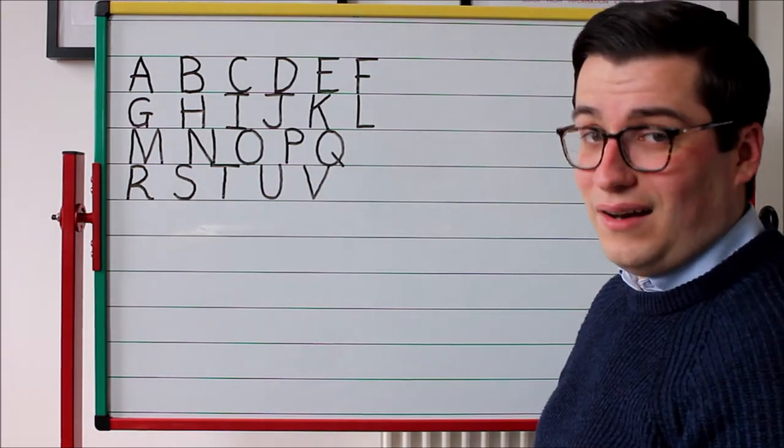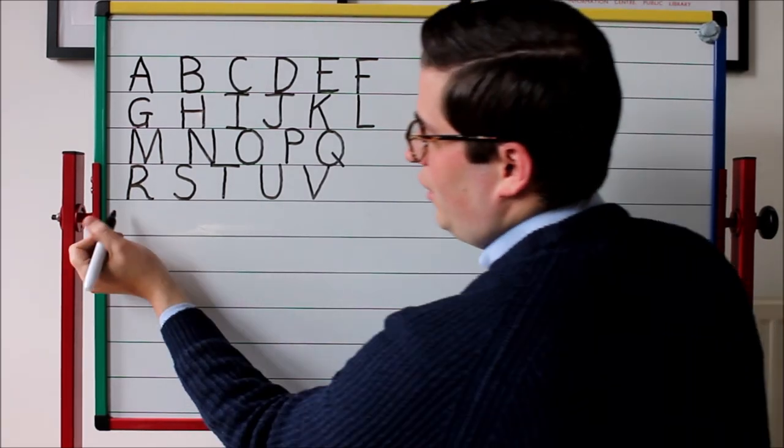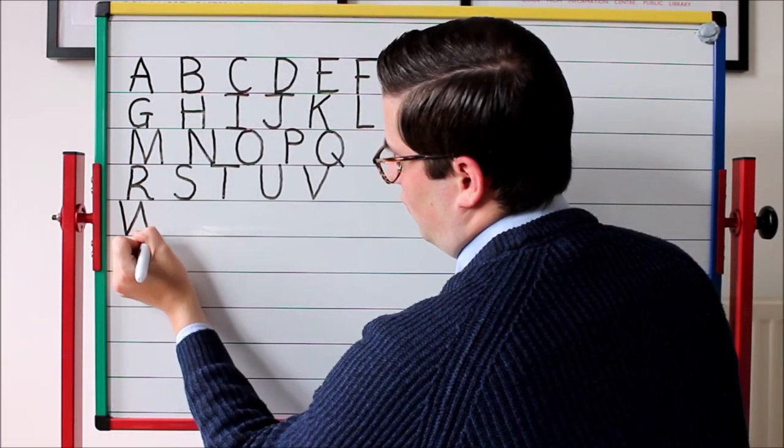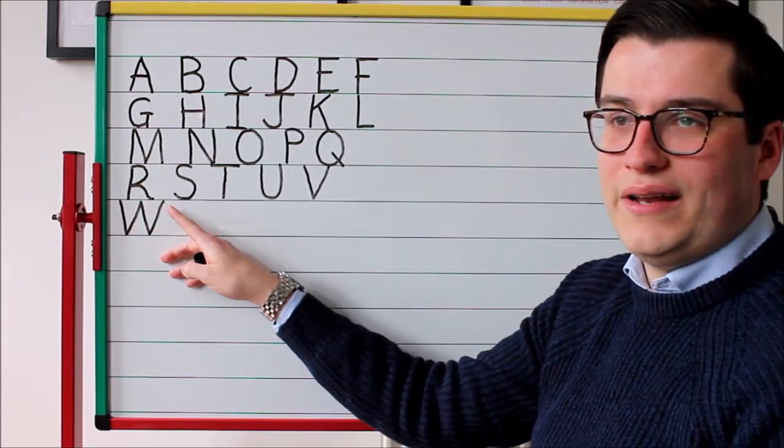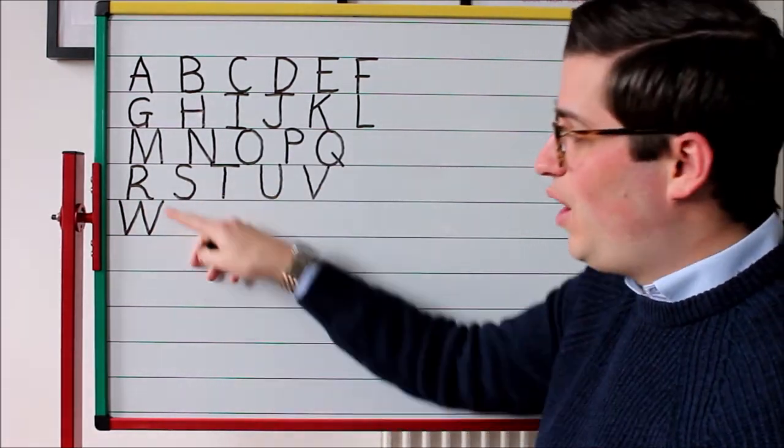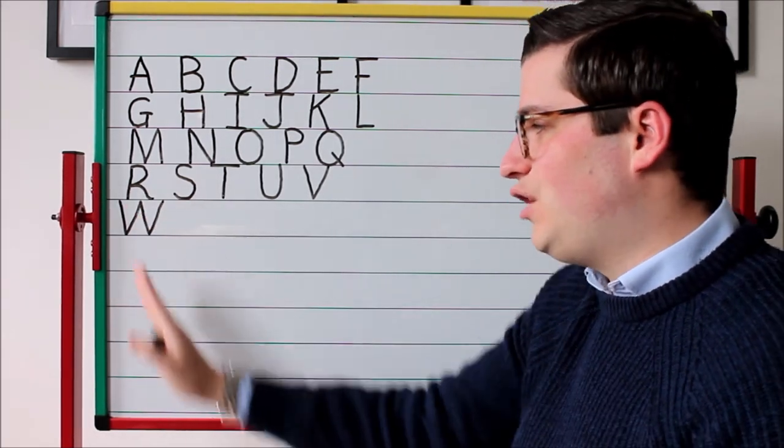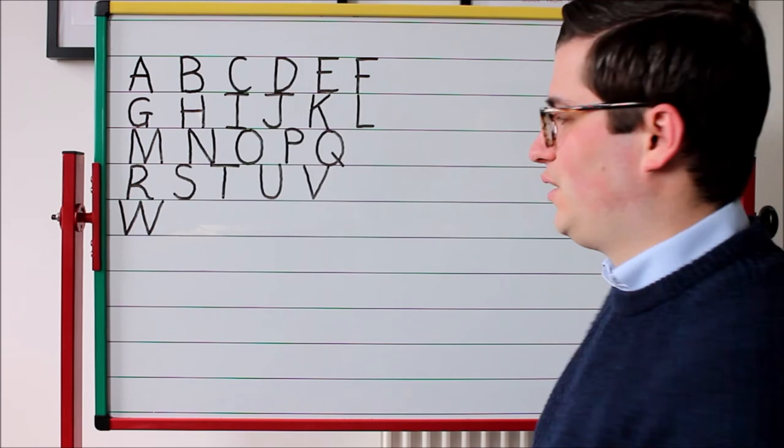With W again, like we talked about last time, you need to make sure that it's pointy and again that all three points come right the way back up to the top. There isn't one, sometimes you can see in some kind of handwriting it stops there in the middle, it should come all the way back up to the top.